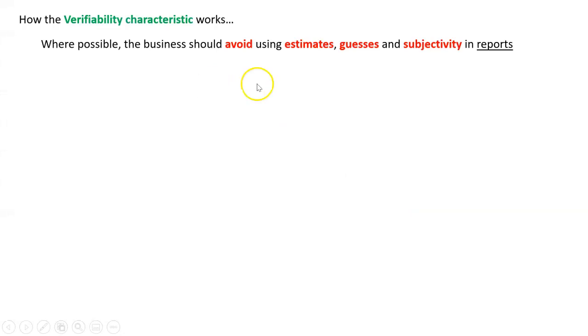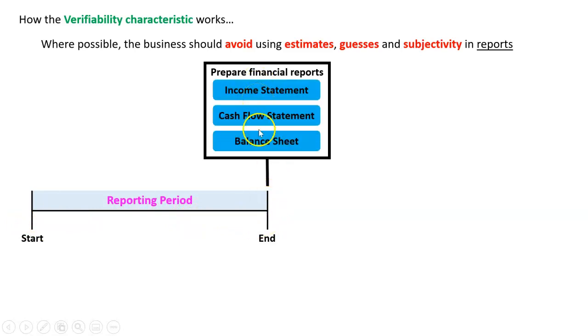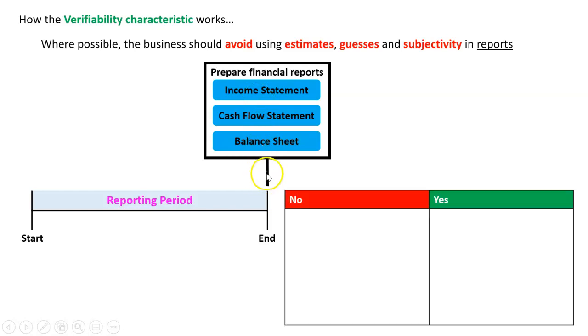Where possible, we should avoid using estimates, guesses, and subjectivity in reports. So here's a reporting period. Let's say it's a year. That's 2021 right there. It began. It ended. When it ended, we prepared an income statement, a cash flow statement, and a balance sheet. Here's what we don't do.